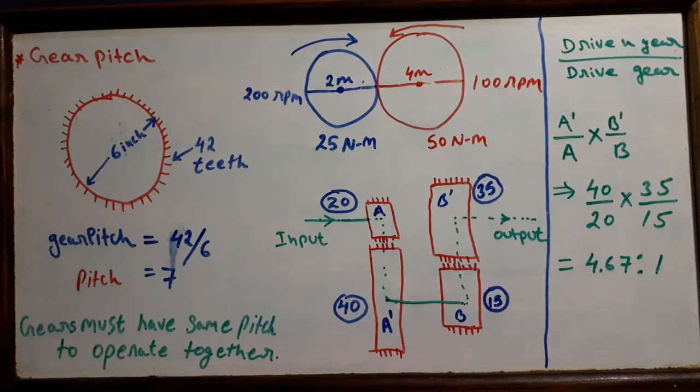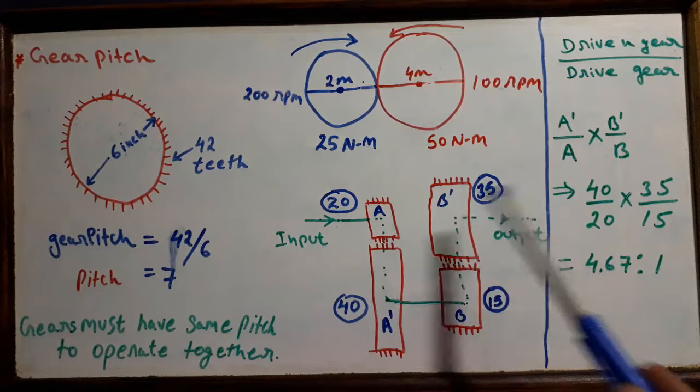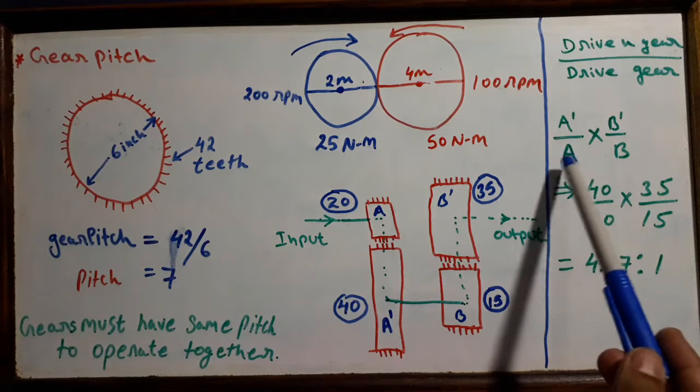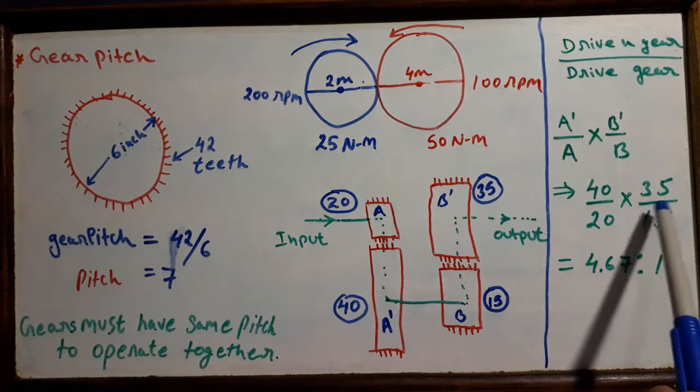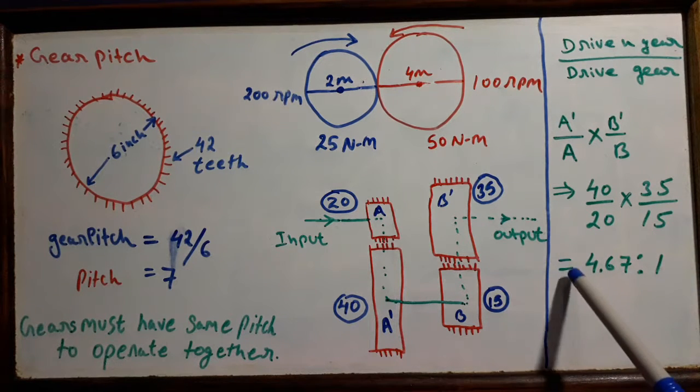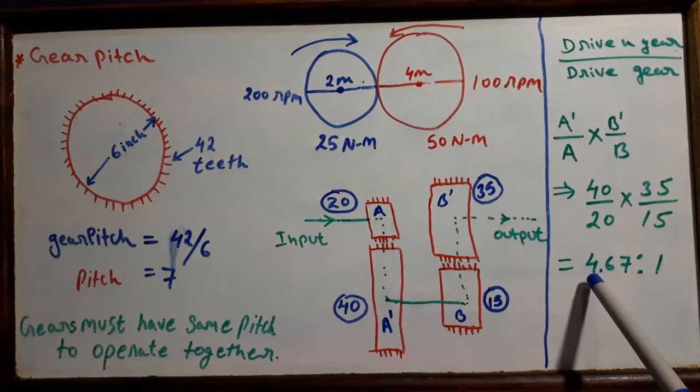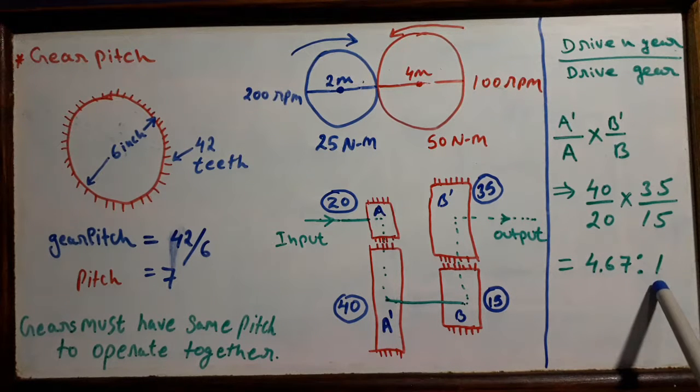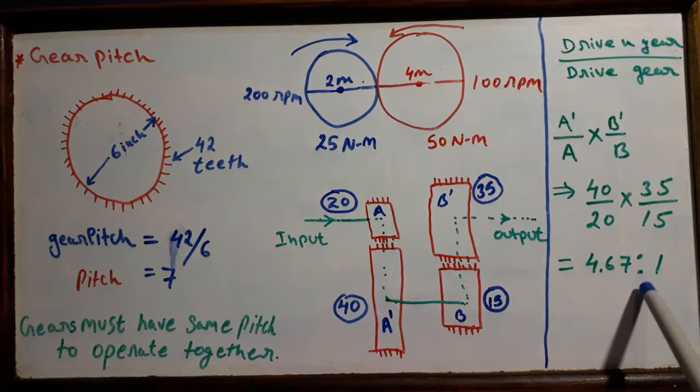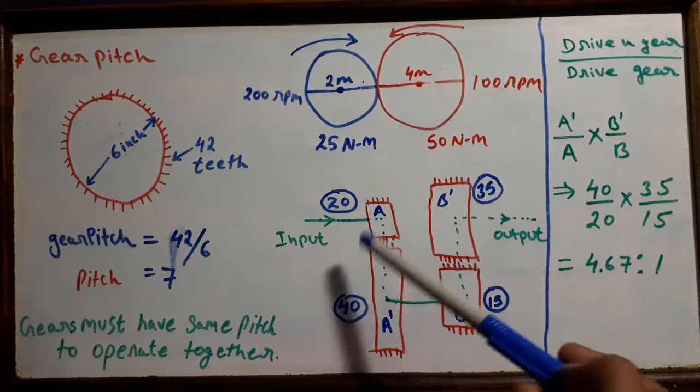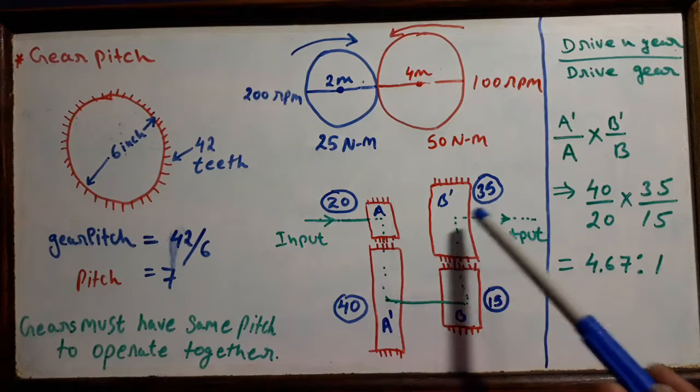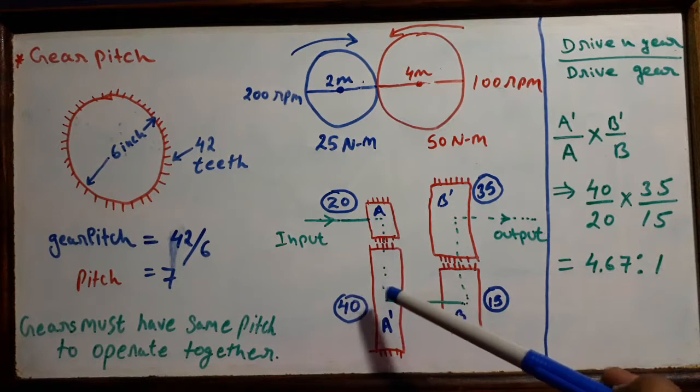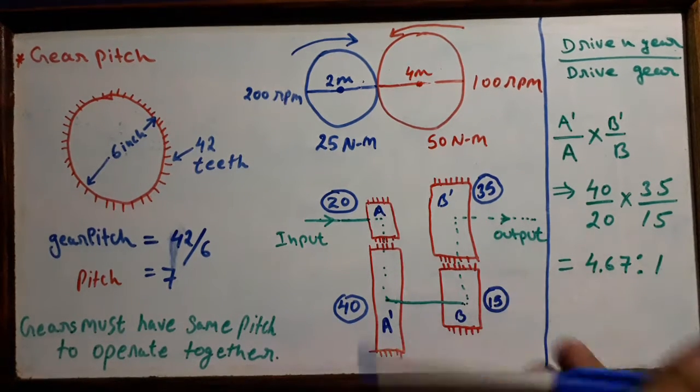Putting these values in this equation, we will get 40 divided by 20 and 35 divided by 15. We will get the gear ratio of 4.67 to 1. This is the gear ratio that we calculated for this transmission system in the current gear engagement.